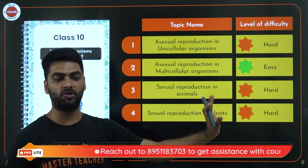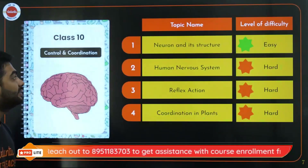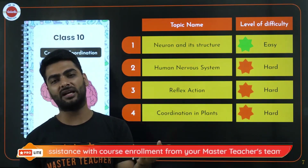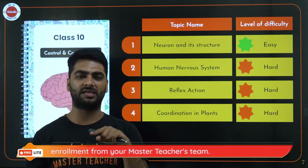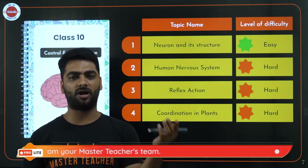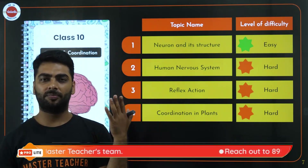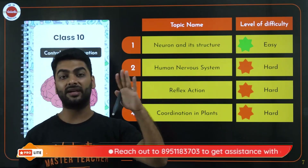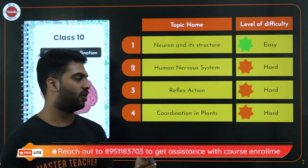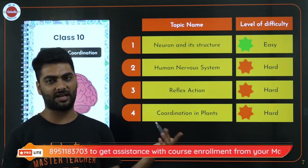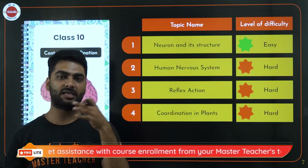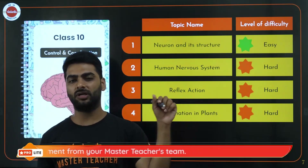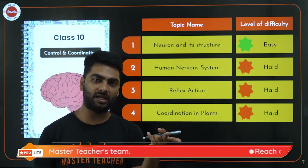In Control and Coordination, the neuron structure is quite easy. The human nervous system has difficult names — midbrain, forebrain, hindbrain, corpus callosum, cerebrum, cerebellum, medulla oblongata, pons, thalamus, hypothalamus, and spinal cord — which get tricky with terms like diencephalon and mesencephalon. Reflex action is easy: just understand receptor → sensory neuron → interneuron → motor neuron → effector.